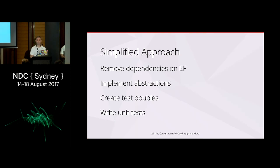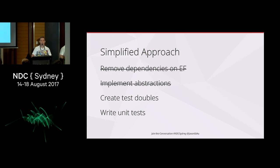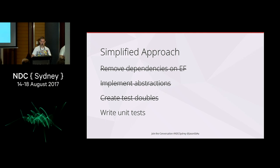The simplified approach is in complete contrast to the typical approach. We don't need to remove our dependencies on EF and therefore won't need to implement any abstractions — we can actually use the DB context where it's required. We won't need to create test doubles in our unit tests; we're going to use the DB context there as well. So we'll just be focusing on one thing: writing unit tests.